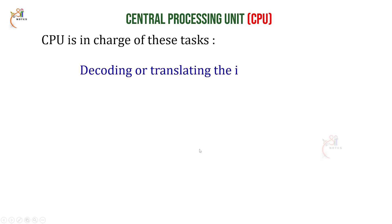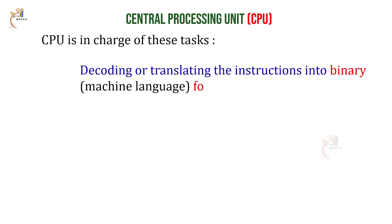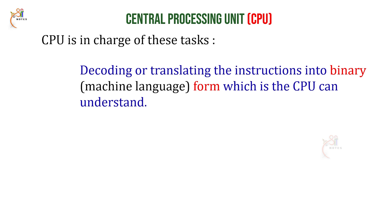Next, decoding or translating the instructions into binary form, which is the form the CPU can understand. As a CPU is an electronic device, it works in binary form - zeros and ones, which is machine language. We have to convert instructions into this binary form so the CPU can decode and translate them.